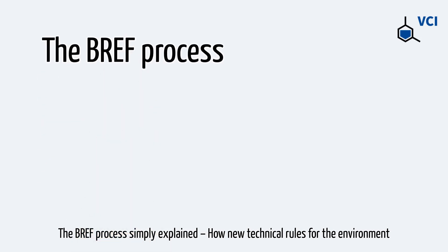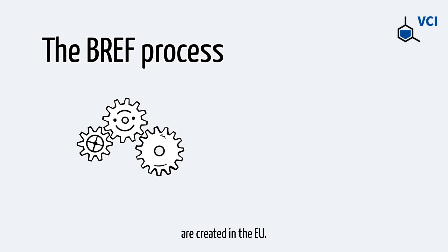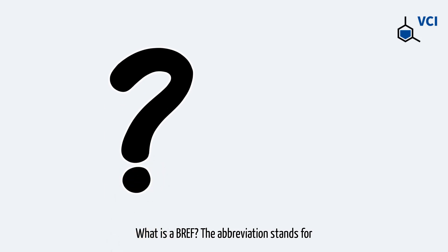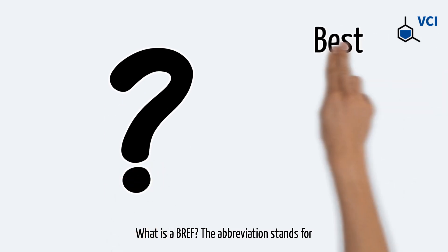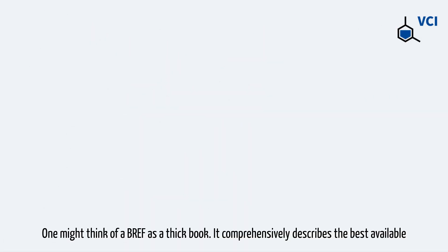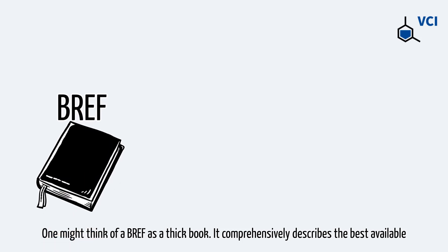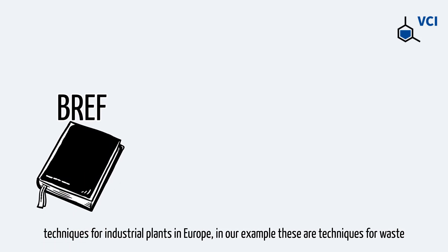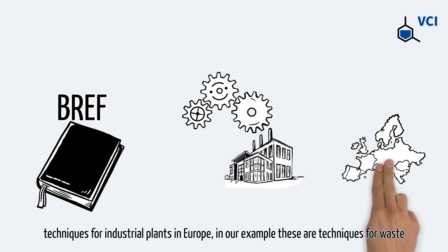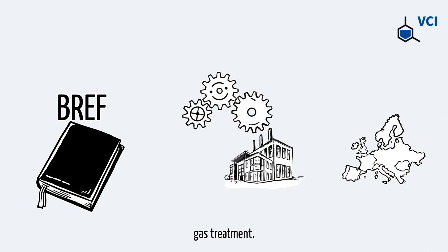The BRAF process simply explained: how new technical rules for the environment are created in the EU. The abbreviation stands for Best Available Techniques Reference Document. One might think of a BRAF as a thick book. It comprehensively describes the best available techniques for industrial plants in Europe. In our example, these are techniques for waste gas treatment.